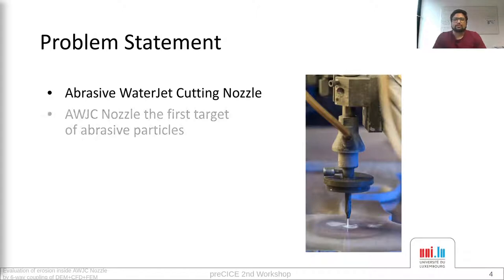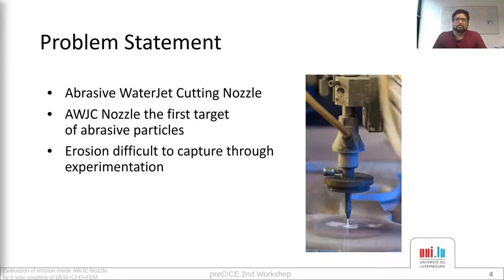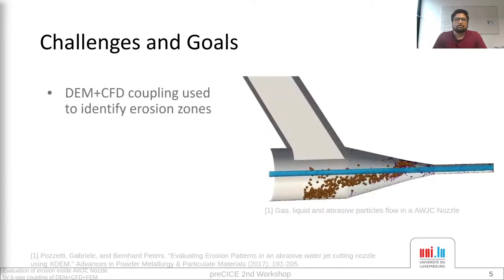As the name suggests, abrasive waterjet cutting nozzle uses a high-speed waterjet entrained with abrasive particles for cutting. Unfortunately, the nozzle itself is often the first target of these particles, which causes erosion inside the nozzle. The erosion inside the nozzle is very difficult to capture through experimentation due to the hostile environment inside the nozzle, so it makes it desirable to have simulations. Up until now, only erosion concentration zones have been identified through simple DEM and CFD coupling. The erosion is estimated through the number of impacts over time, but very crucial factors causing erosion — that is the particle velocity and the angle of attack — are ignored, giving an incomplete picture of the erosion phenomena.